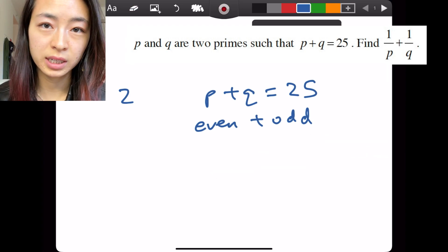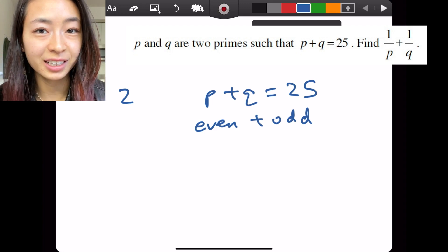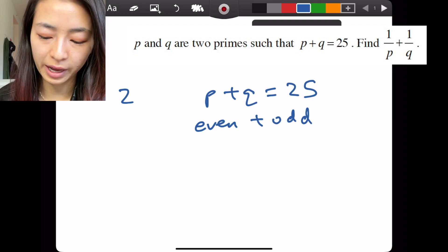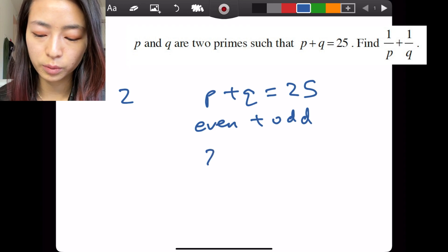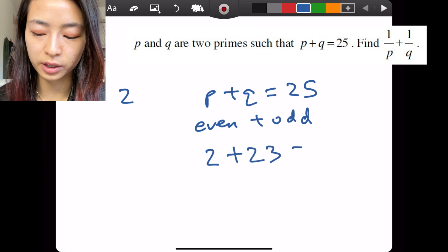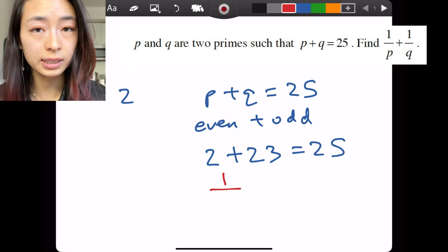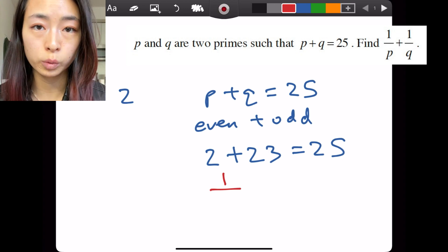Once we have that first step, that right thinking in the right direction, we know that either P or Q, doesn't matter, will be 2 and the other number will be 23. P and Q are parallel in this case. It doesn't matter if they're switched.